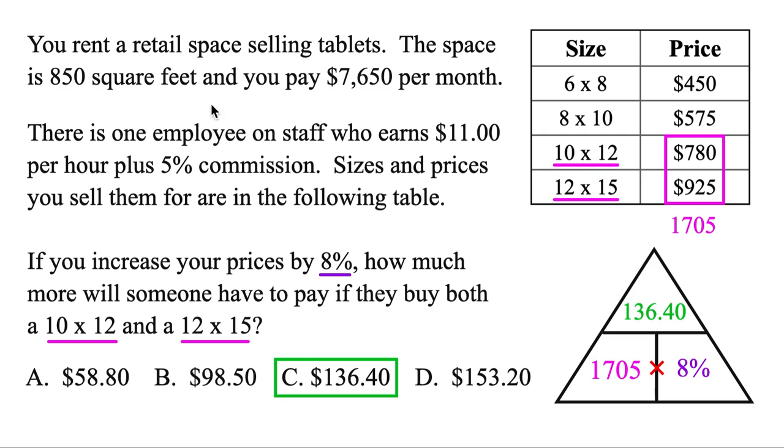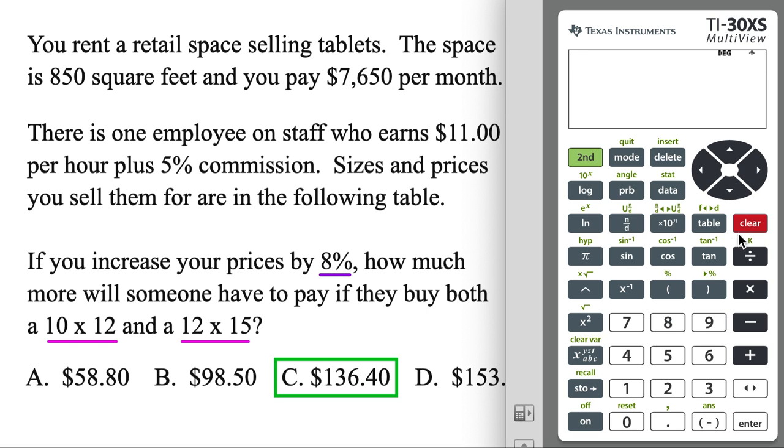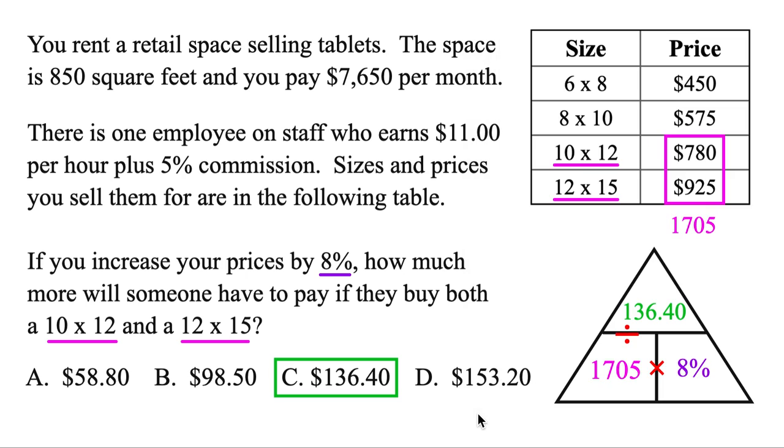Now finally, we could double check this answer. This is the beauty of the triangle. When two things are stacked, you're going to use division. So finally, let's go ahead and do that and see if it gives us 8%. We got our part, $136.40, that was up top. Divided by the total, $1705 in the bottom. And boom. That does give us exactly 8%. So that's one way to double check. That has to be the correct answer, since it fits perfectly in this triangle here.